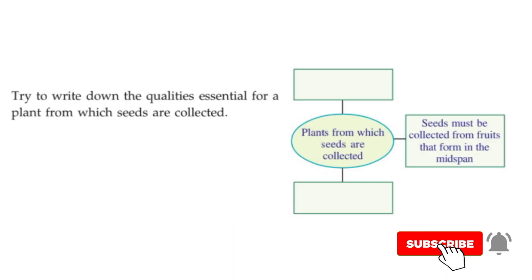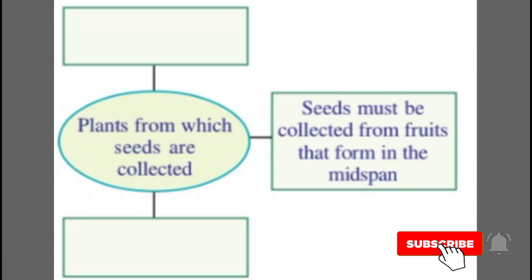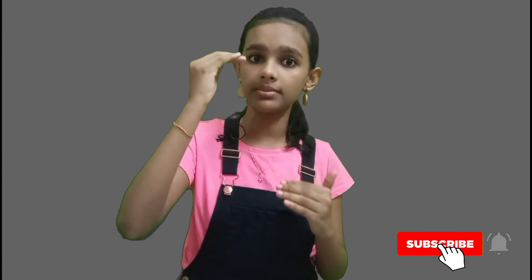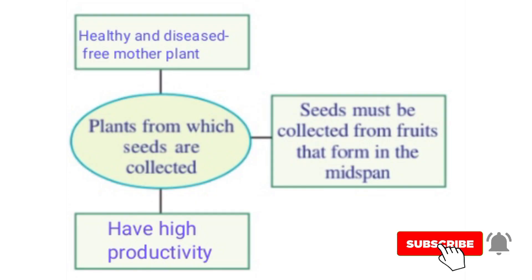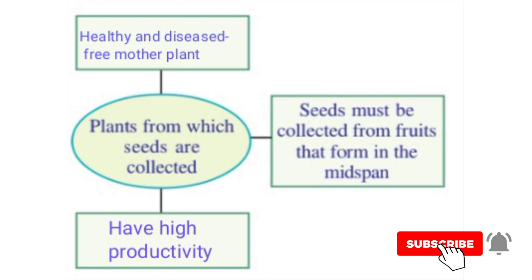Here we have answered the three questions. Now we have another activity: write down the qualities essential for a plant from which seeds are collected. We must write three factors. One factor already given is that seeds must be collected from fruits that form in the mid span. The other two factors are: a healthy and disease-free mother plant, and a plant that has high productivity — we must select seeds from a plant that gives us more yield.